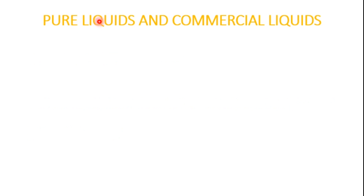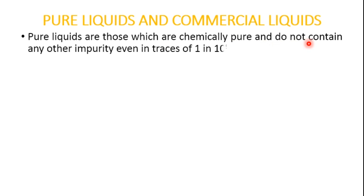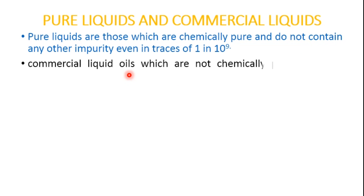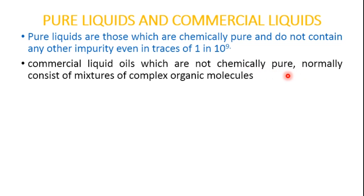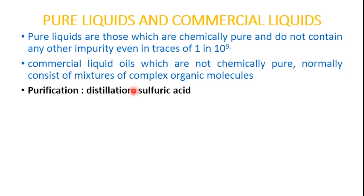The next concept is pure liquids and commercial liquids. Pure liquids are those which are chemically pure and do not contain any impurities, even at the trace level of 1×10⁻¹⁹. These are structurally simple. Examples of pure liquids are n-hexane, n-heptane, and other paraffin hydrocarbons. Commercial liquid oils are not chemically pure and normally consist of mixtures of complex organic molecules which cannot be easily specified or reproduced in a series of experiments.